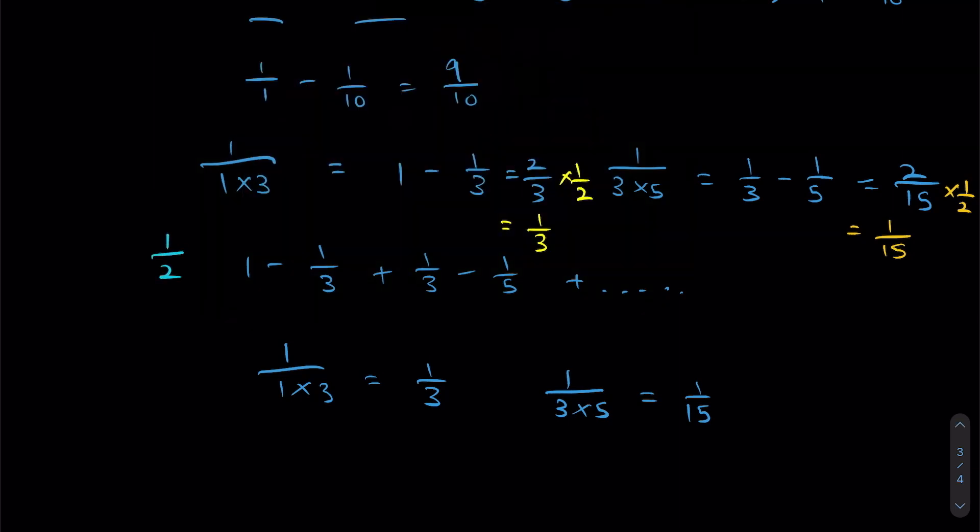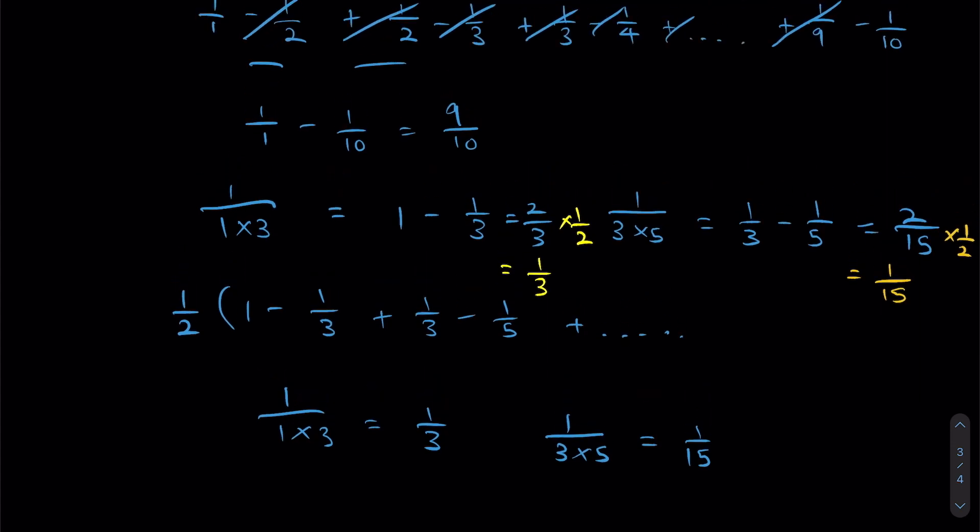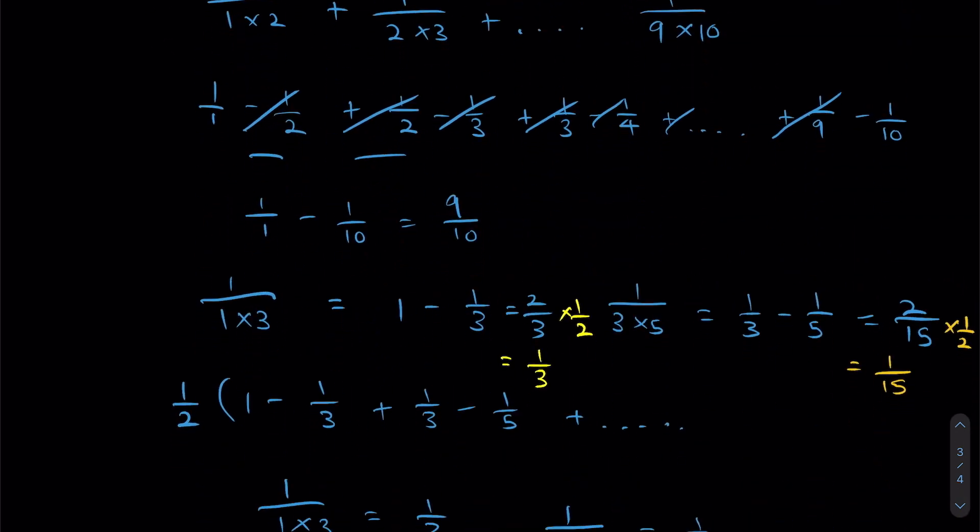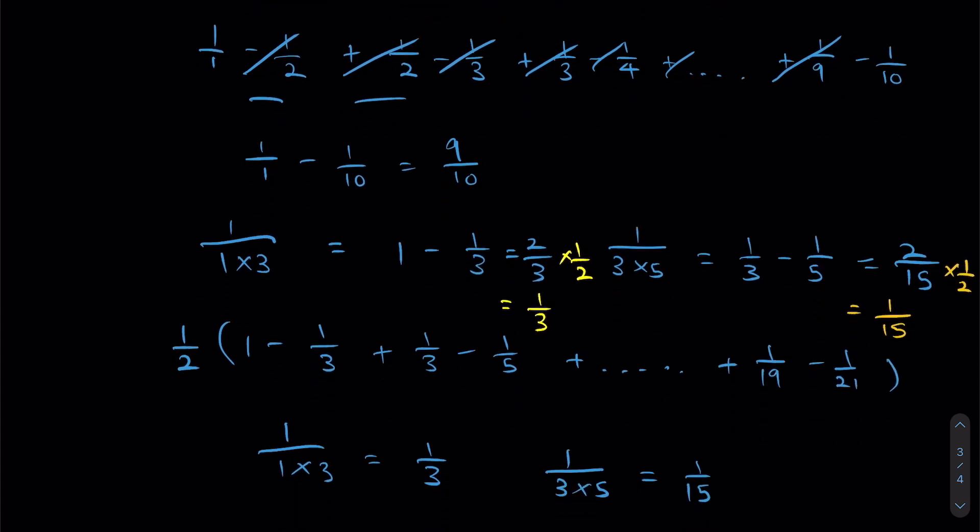So I'm going to put a half here. And I'm going to put a half here. I'm going to put a bracket throughout. And then we're just going to go on with our normal addition. So where must we go until? We have to go until 1 plus 1 over 19 minus 1 over 21. Like that.